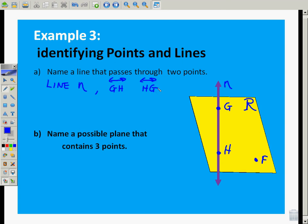Name a possible plane that contains three points. Well, plane R contains three points. It contains G, H, and F. But also, plane GHF contains those three points as well. By definition.